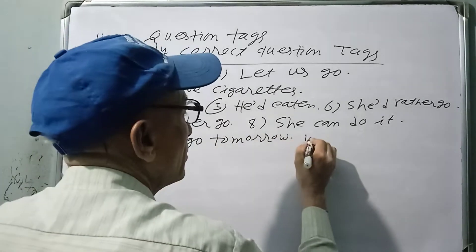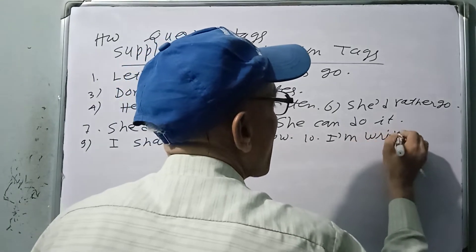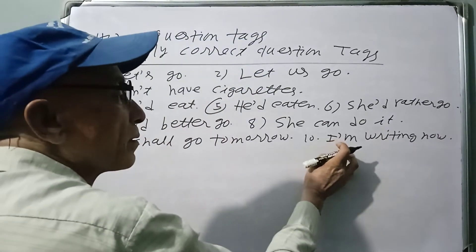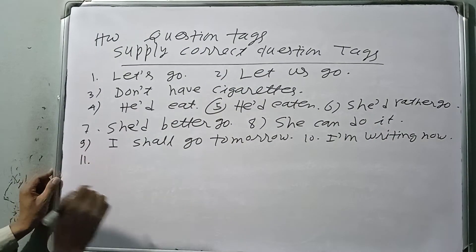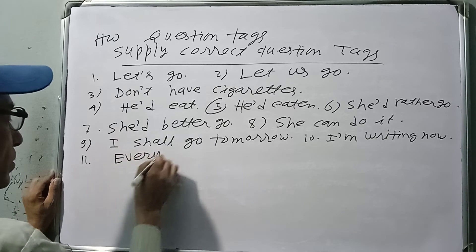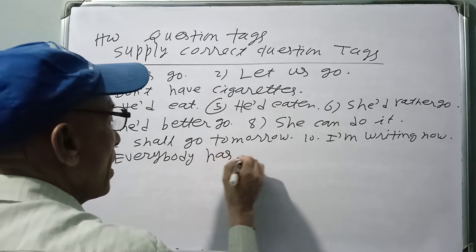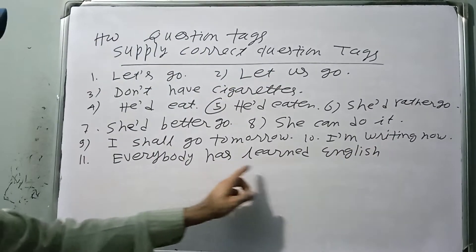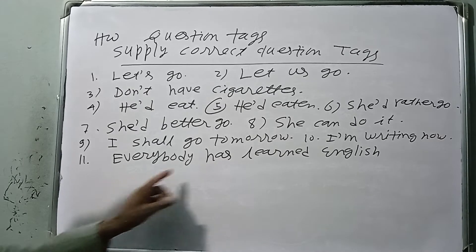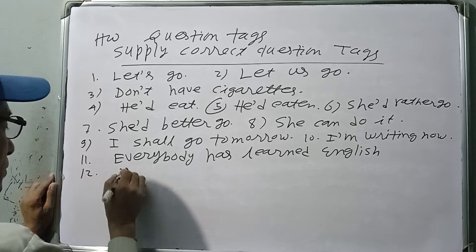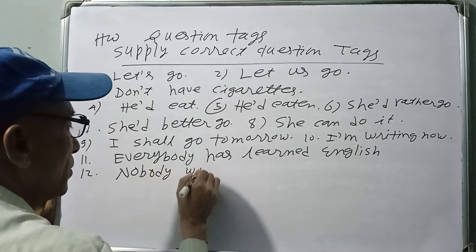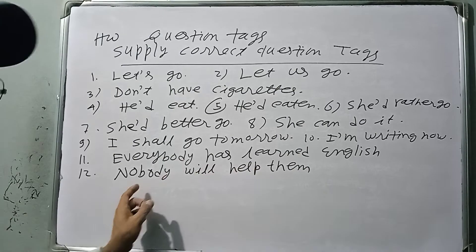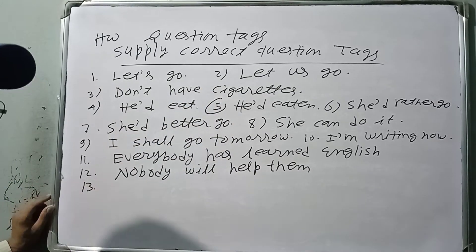For 'I am writing now' — write the sentence with a comma, and the tag is 'aren't I.' In the same way, 'Everybody has learned English' — since everybody takes 'they,' the tag is 'haven't they.' 'Nobody will help them' — the tag is 'will they.' Also note the difference between 'is' and 'has' in contractions like 'she's eating now' versus 'she's been eating.'